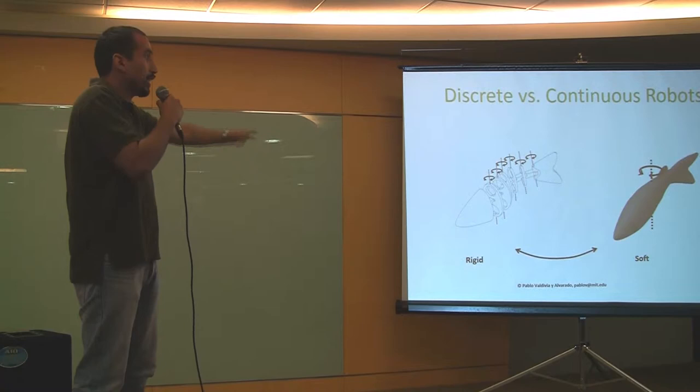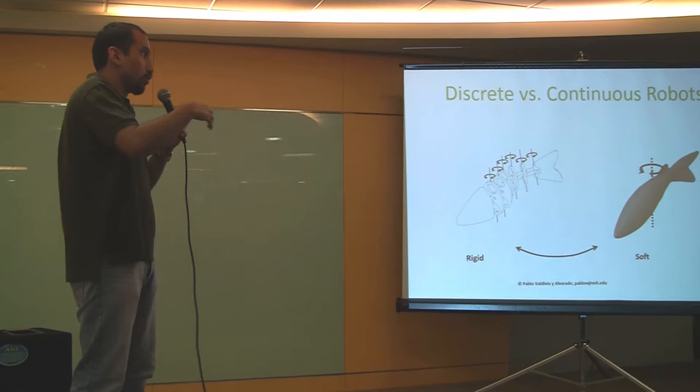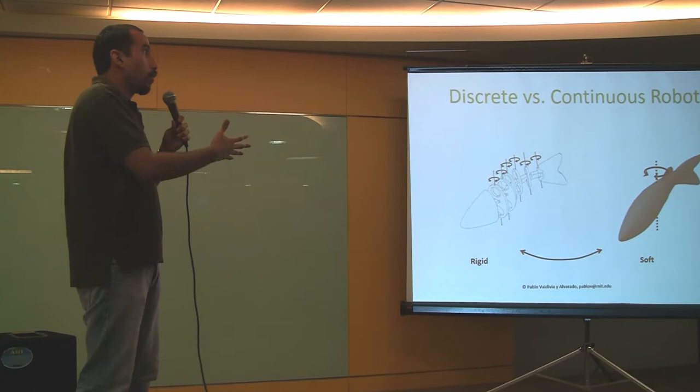Say we want to build a robotic fish. If we take the traditional approach to robotics, we end up with a design that looks like the one on the left where we have a complex assembly with several links—each link is going to be activated by a motor, gears, pulleys, etc.